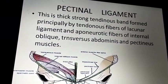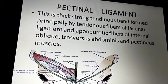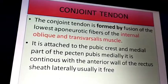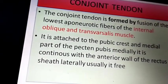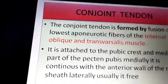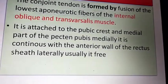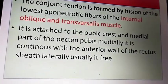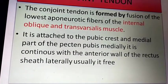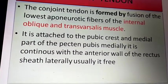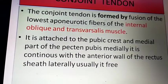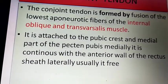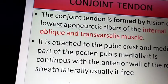The pectineal ligament is a thick, strong tendinous band formed principally by the tendinous fibers of the lacunar ligament and the aponeurotic fibers of the internal oblique, transverse abdominis, and pectineus muscles.